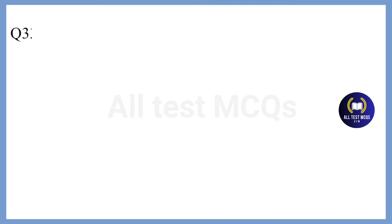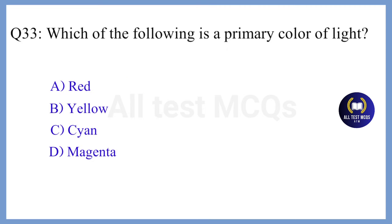Question 33. Which of the following is a primary color of light? The correct answer is Option A. Red.